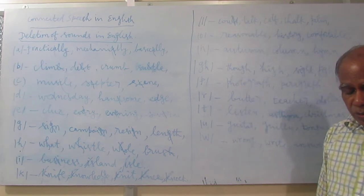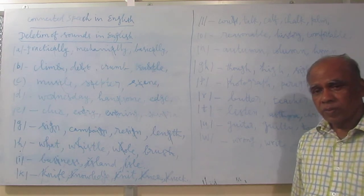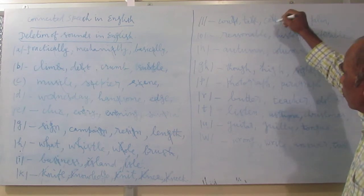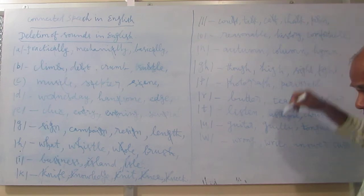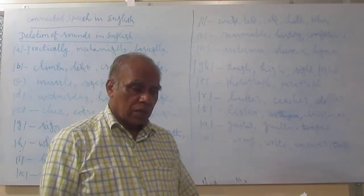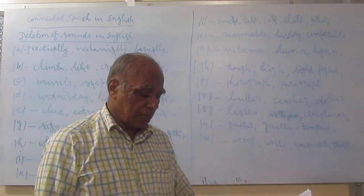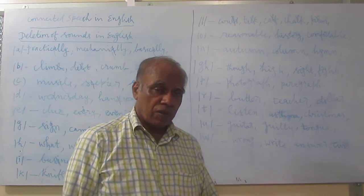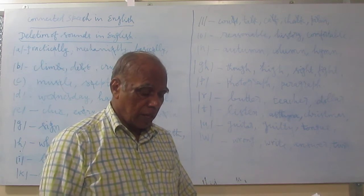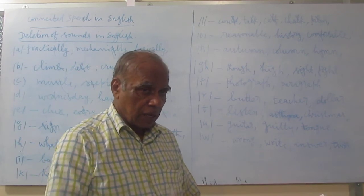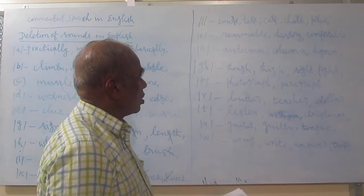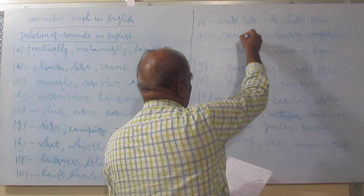Next, the 'l' sound is deleted. Could, should, would — the 'l' is deleted. Also: cough, chalk, fork, salmon (S-A-L-M-O-N) — the 'l' is deleted; half, chalk, almond (A-L-M-O-N-D) — the 'l' is deleted.